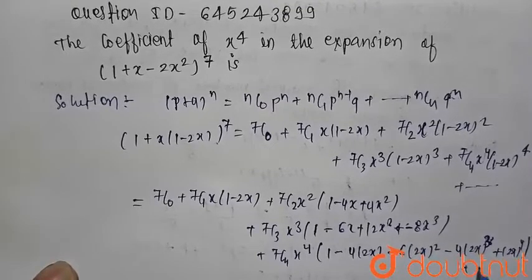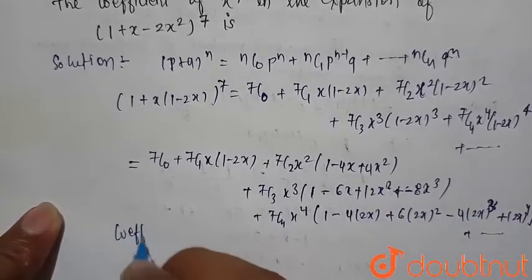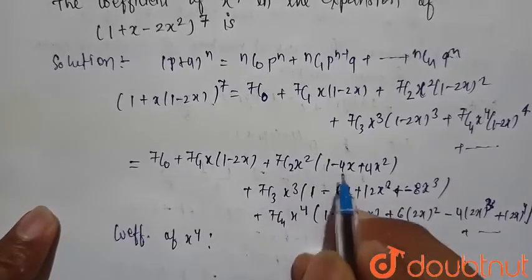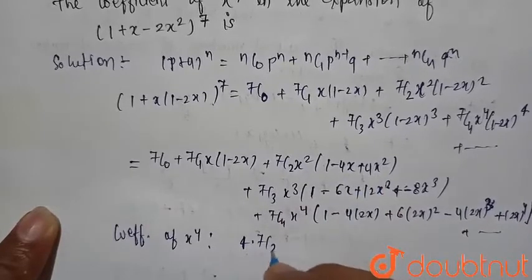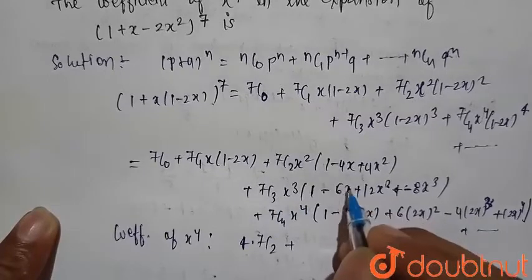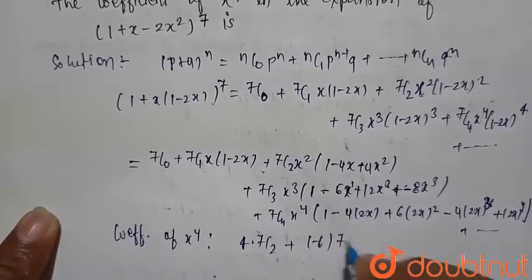Now we want to find the coefficient of x raised to power 4, so we can write this is equal to here 7C2 multiplied with 4, that is equal to 4 times 7C2. Similarly here, 7C3 is multiplied with x raised to power 1, that is minus 6, so minus 6 is multiplied with 7C3.